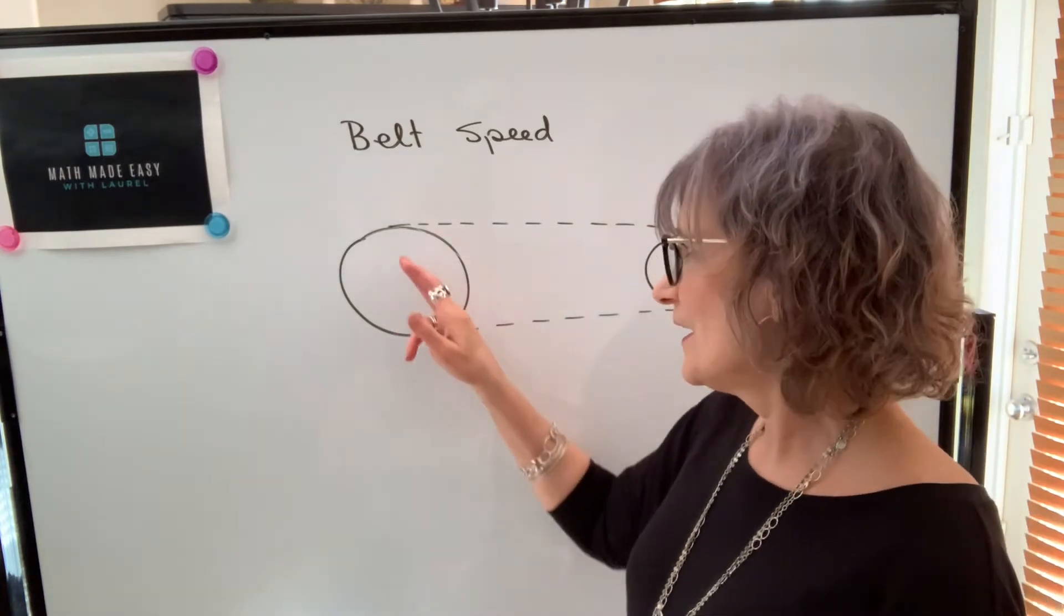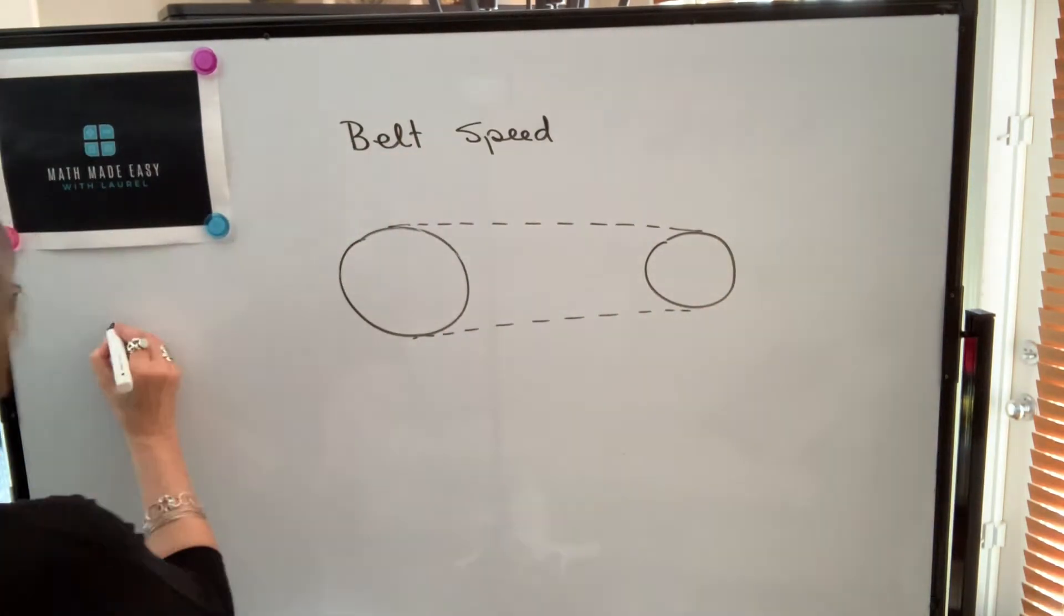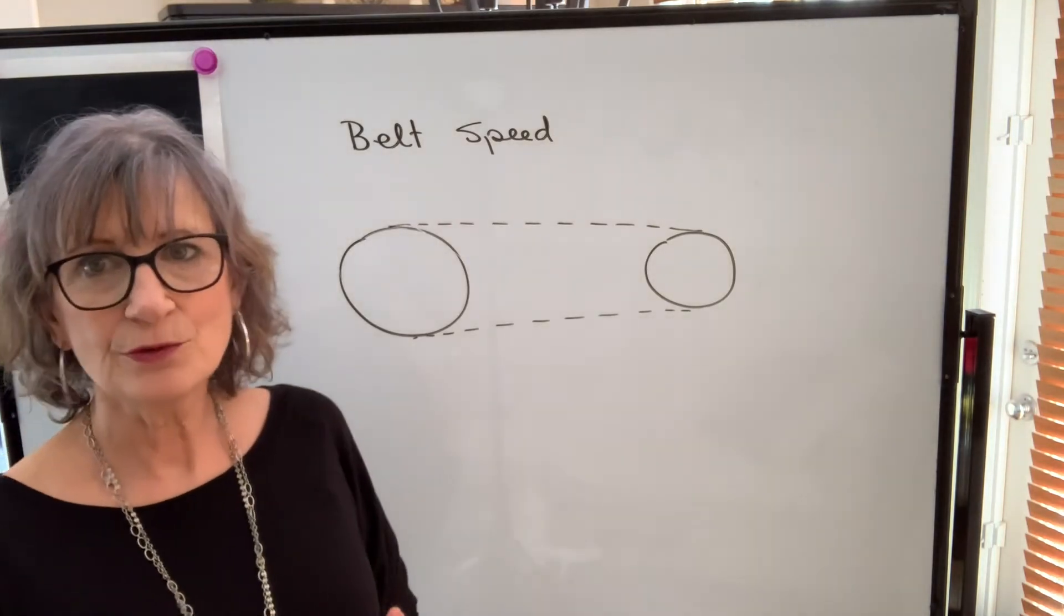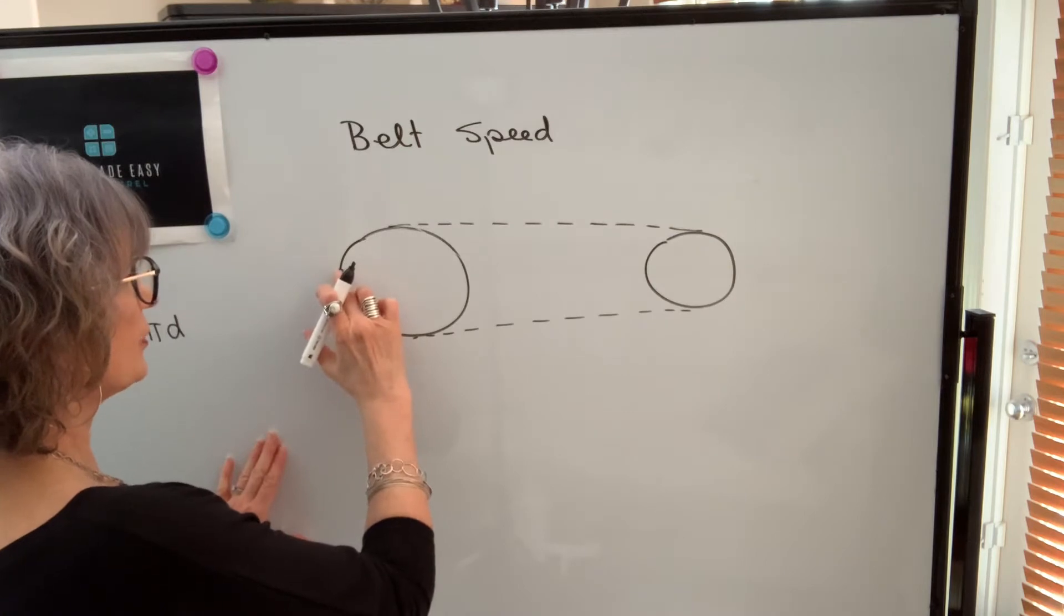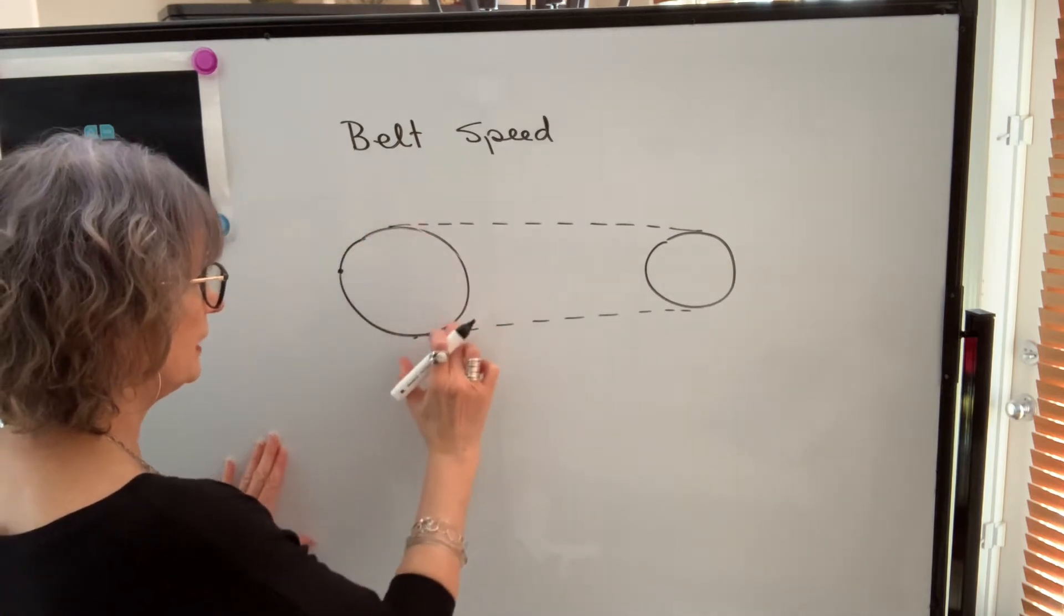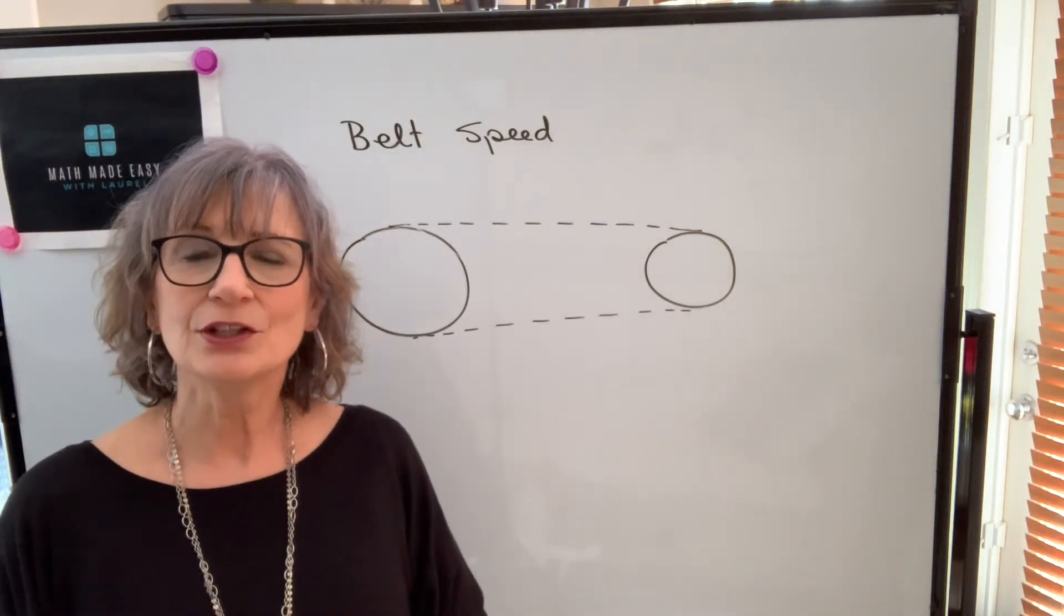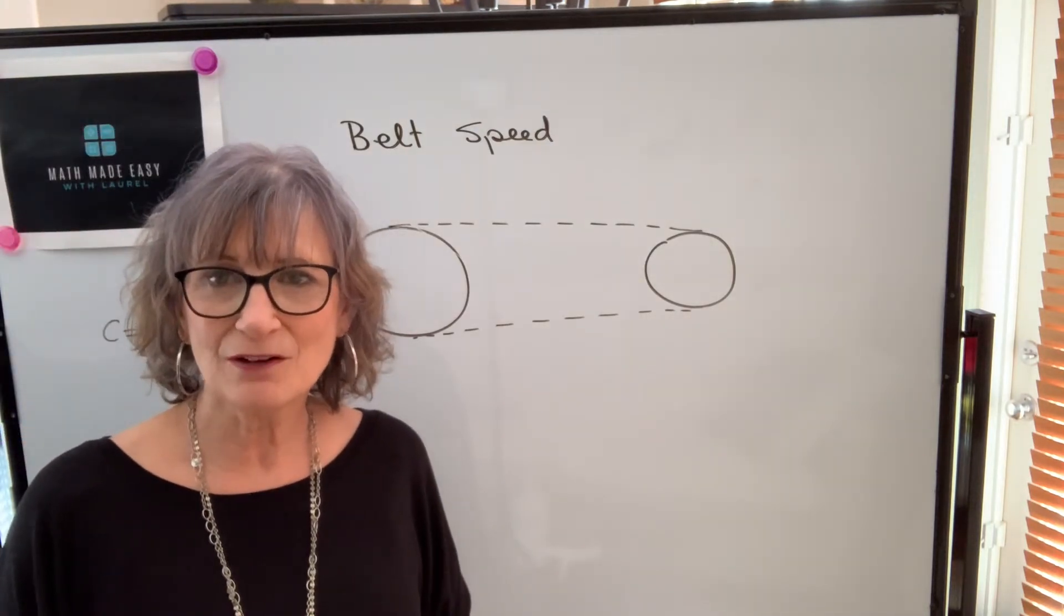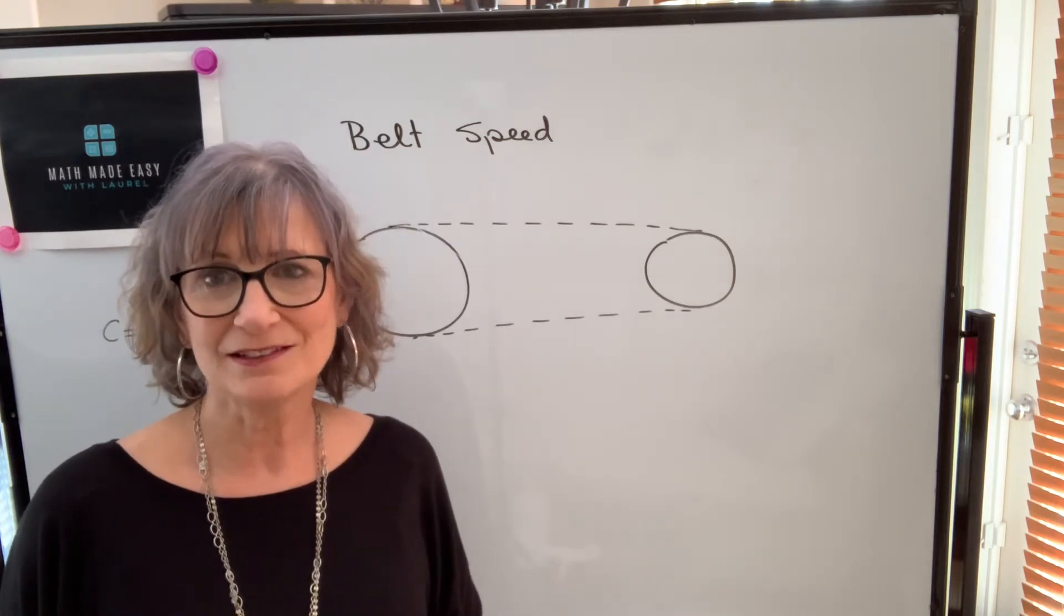In order to find that speed, I need to use the distance around a circle, which is called the circumference. And the circumference of a circle is pi times the circle's diameter. So if I think about a point on this pulley, the circumference will be equivalent to the distance that that point will travel in one revolution. That will be the linear speed of that point. If I want to know how fast that point is traveling in a minute, I need to know how many revolutions per minute that pulley is making.